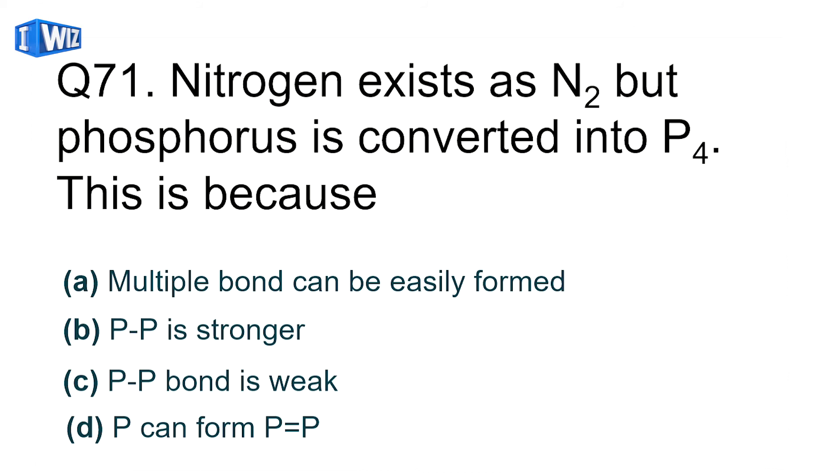Why does nitrogen exist as N2 but phosphorus as P4? This is because nitrogen triple bond is strong but phosphorus triple bond is not strong, but P single bond is strong. That's why phosphorus exists in P4 form showing catenation. B is correct.